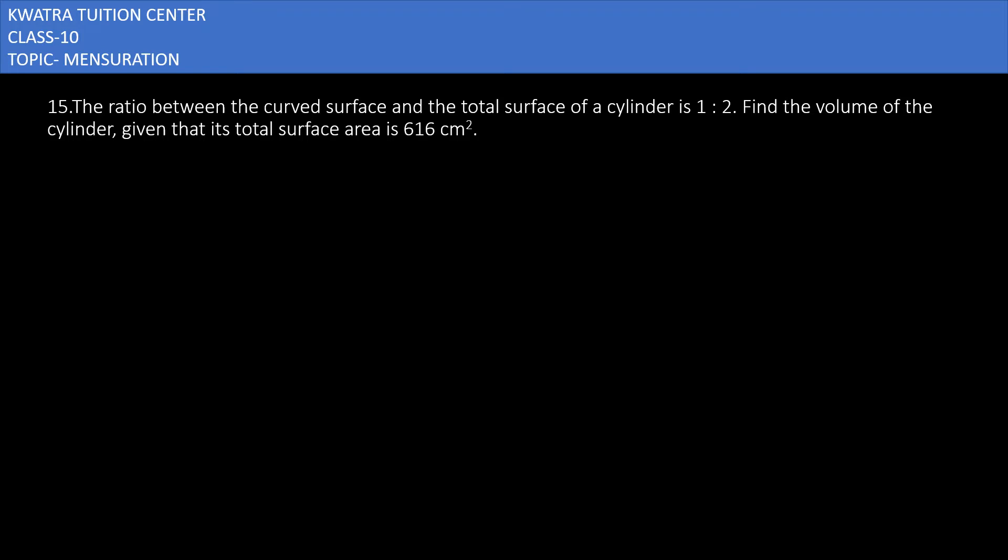So you have CSA, you have TSA. CSA is equal to 2πrh and TSA is equal to 2πr(r+h). This equals 1 over 2. You can cancel 2πr with 2πr, so you are left with h over (h+r) is equal to 1 by 2.